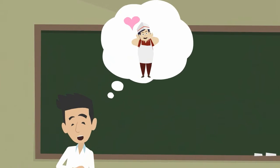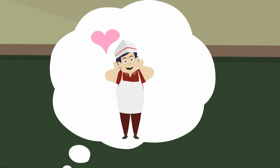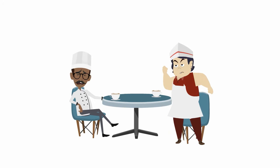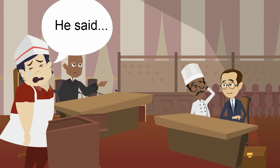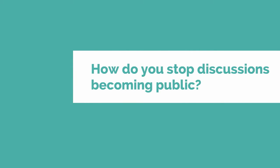An employee may welcome your proposed termination package, but what happens where discussions break down? At an employment tribunal hearing, your employee may tell the tribunal about your off-the-record discussion to prove that your working relationship has broken down. So how does your business stop these discussions from becoming public?